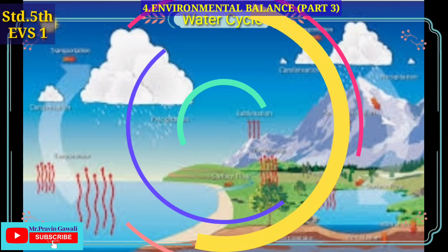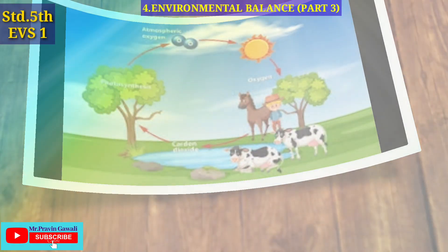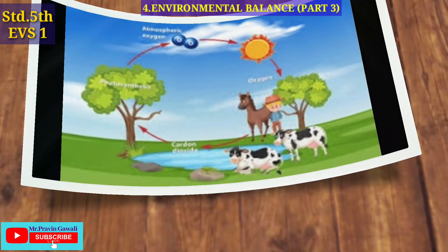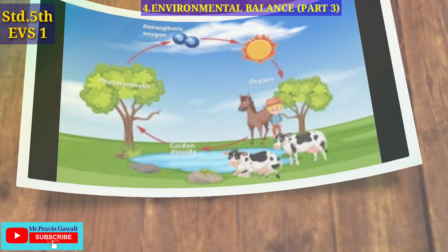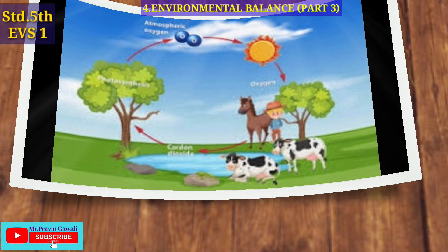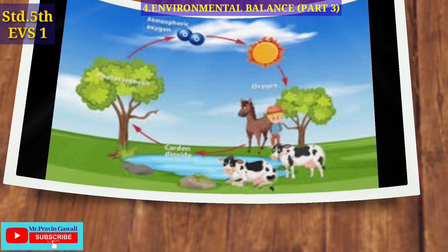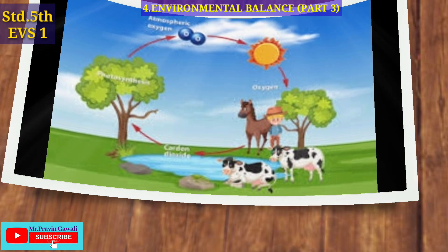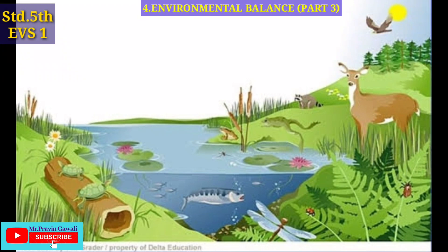This is called the water cycle. Living things use oxygen from the air for breathing and give out carbon dioxide. Plants use carbon dioxide from the air for making their food, and oxygen is given out in the process and added to the air again. This is also an important cycle in nature, and there are several other such cycles in nature.